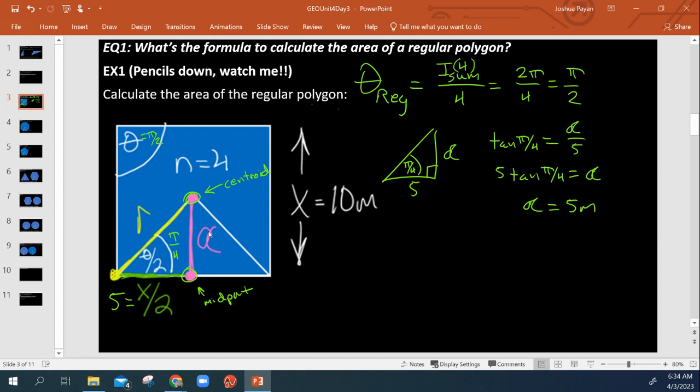Well, it turns out there's a formula for the area of a regular polygon. And that formula is simply this.